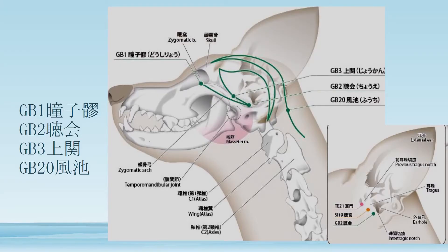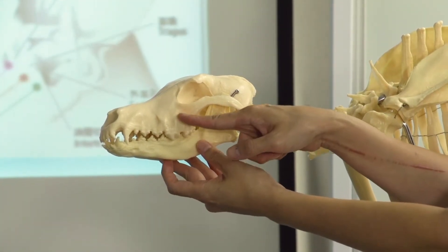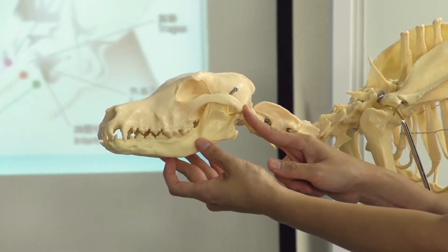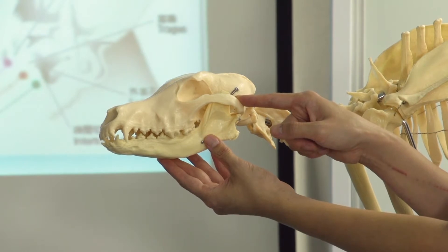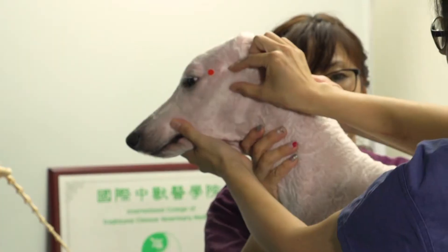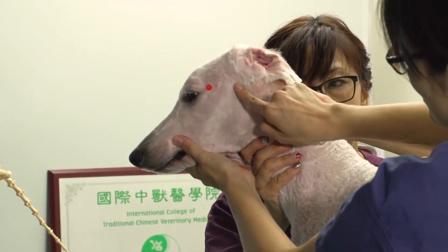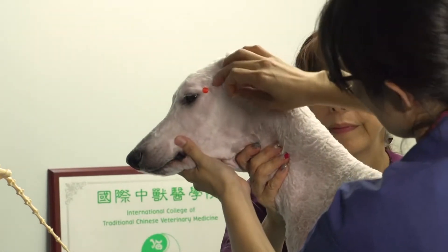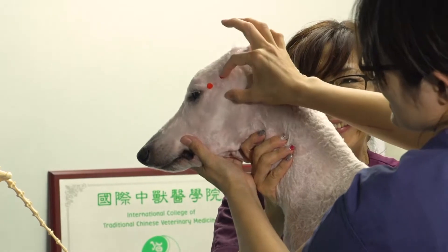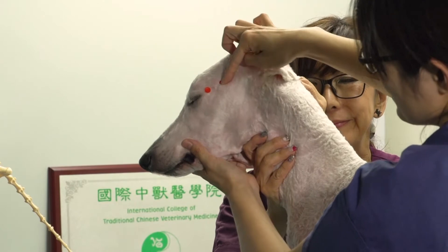GB3 is in the depression above the zygomatic arch. This is the zygomatic arch, and GB3 is located in the depression above it.